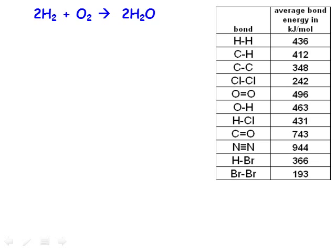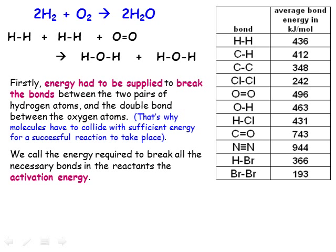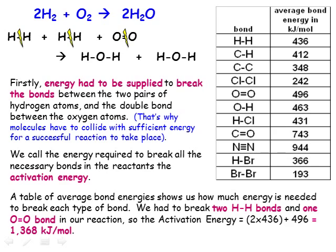We'll use the reaction between hydrogen and oxygen to make water as an example. It helps if we first rewrite the equation so that we can see all the bonds between the atoms. Firstly, we have to break the bonds between the hydrogen atoms and the double bond between the oxygen atoms. The energy required to do this is the activation energy for the reaction. To find out how much energy is needed, we use a table of average bond energies. Each of the two hydrogen-to-hydrogen bonds requires 436 kJ per mole, and the oxygen-to-oxygen double bond requires 496 kJ per mole, so that in total the activation energy for our reaction is 1368 kJ per mole.